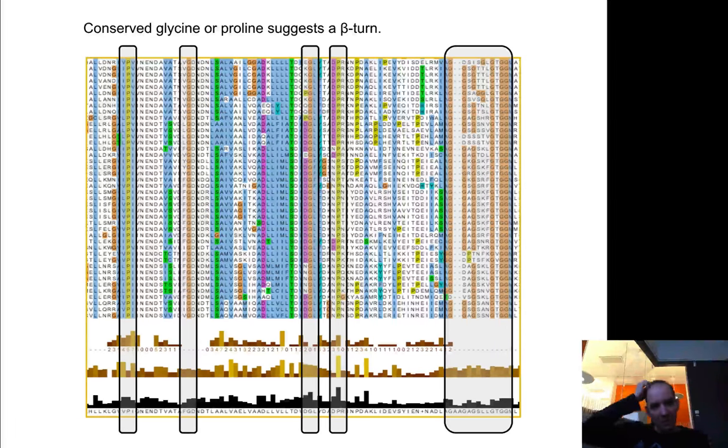You can find, for instance, conserved proline or glycine. You can actually see here you have a lot of glycines there that probably indicate some kind of specific beta-turn. So that's conserved residues of particular types giving good information.